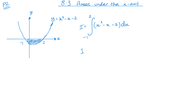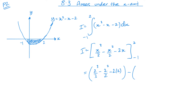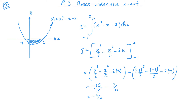I'm just going to leave it as that. So, x cubed over 3 minus x squared over 2 minus 2x, between 2 and negative 1. Substituting in 2 and negative 1, we end up with minus 10 over 3 minus 7 over 6, and this gives me minus 9 over 2.